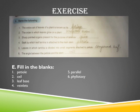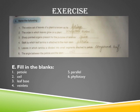Now we will come to the exercise. I will deal only with the objective questions today; short answer and long answer questions will be discussed in the next video lesson. Name the following: the entire set of leaves in a plant is known as its foliage (F-O-L-I-A-G-E). The order in which leaves grow on the plant is acropetal order — younger leaves are towards the apex and older leaves are towards the base. Sharp pointed organs present for protection are spines. The stalk by which leaf lamina is attached to the main stem is the petiole. Leaves in which the lamina is divided into small segments attached to the petiole form a compound leaf. The angle between the petiole and the stem is known as the axil.